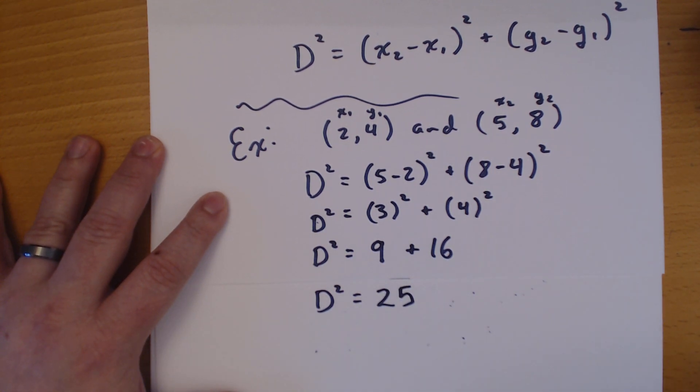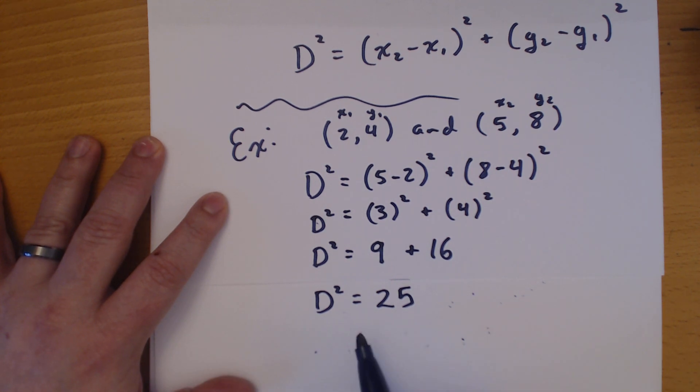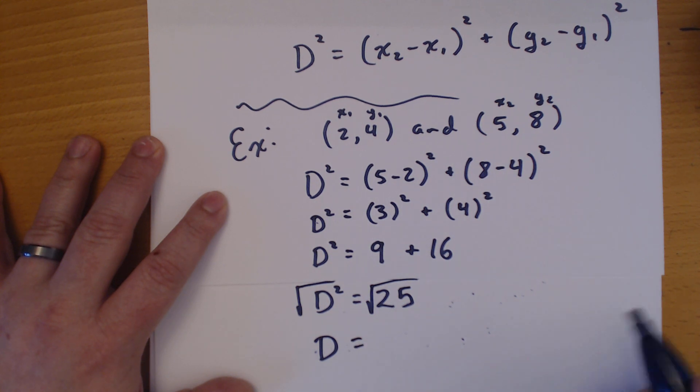Now, the distance between these points is D. What I found is D squared. What I want to do is get rid of that square. So the opposite operation of squaring something is to square root it. So if I square root both sides, the square and the square root cancel out and I just get D. The square root of 25 is 5.